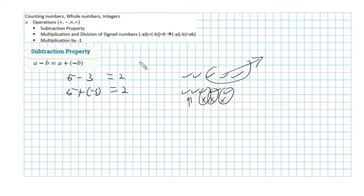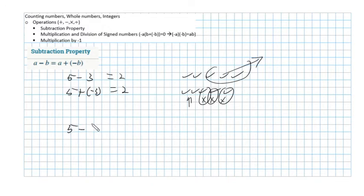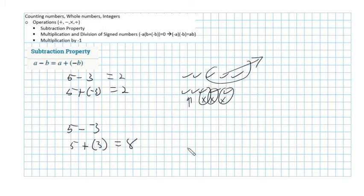I really hope you don't go making x's and check marks all the time — this is just to help you remember it. You should be able to do this a lot quicker. Now suppose I have 5 minus a negative 3. We can use this property and say that's 5 plus the negative of negative 3, which is 5 plus 3. And of course, that's 8.